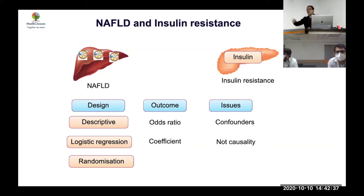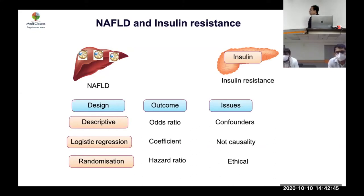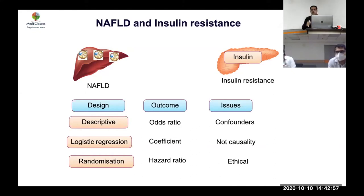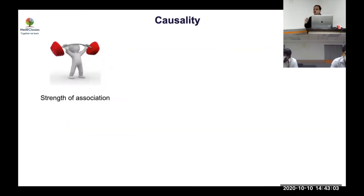Most studies in medicine are descriptive and use regression analysis, concluding only that something is associated — they do not prove causality. For proving causality, you need an actual randomized study. This matters because all your clinical interventions depend on causality, not just association.